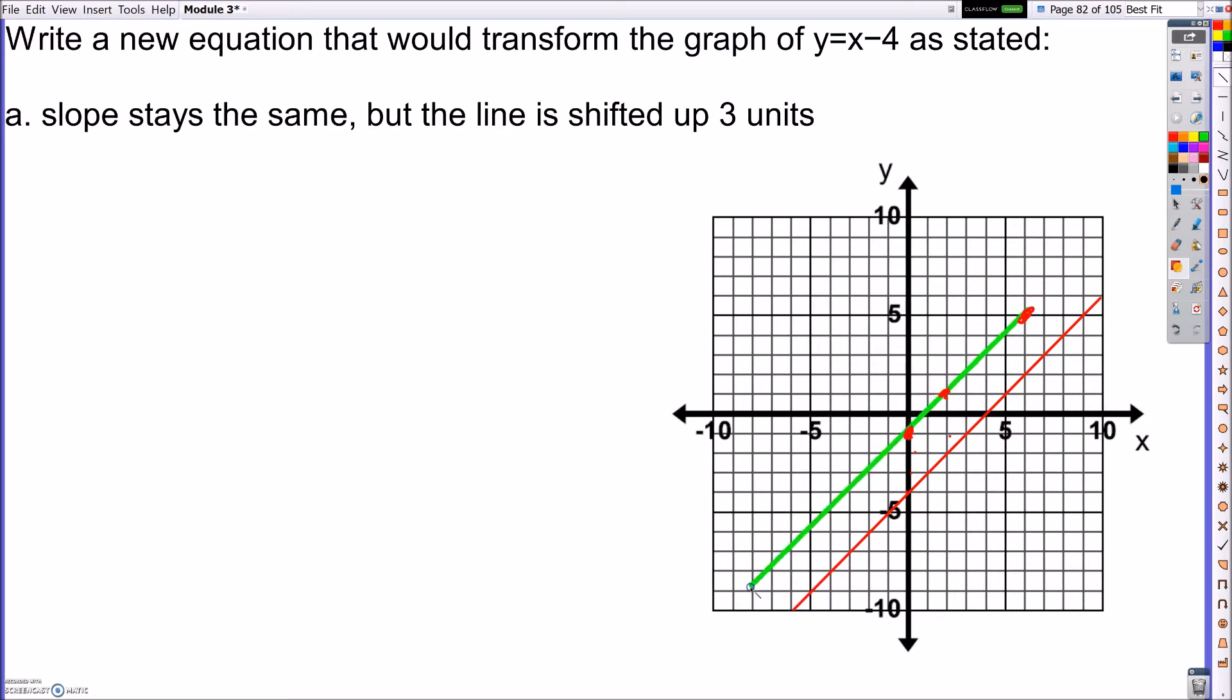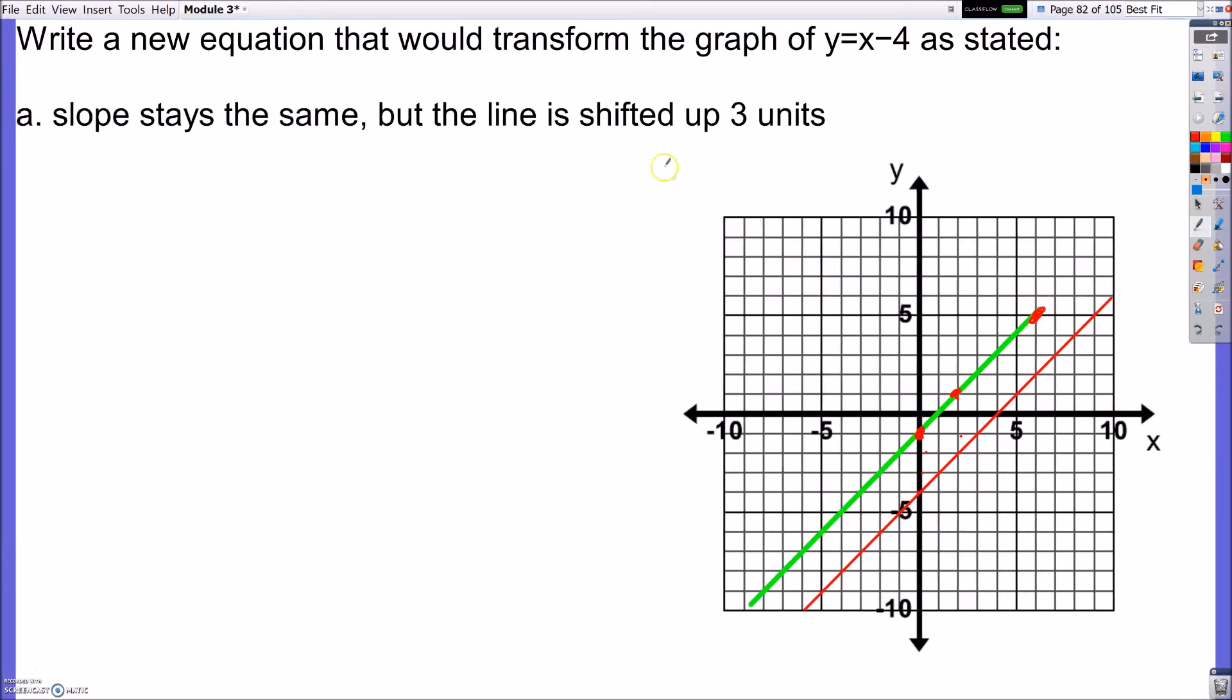So if I had a line that was up 3 more units, how does the equation differ? When I move the line up and down, I want you to notice that the slope doesn't change. I still go up 1, over 1, up 1, over 1, up 1, over 1. So my slope is still 1, but now my y-intercept is different.